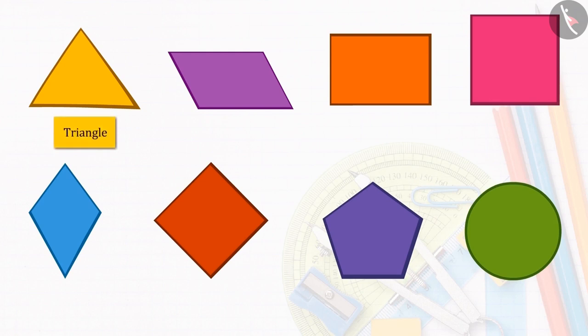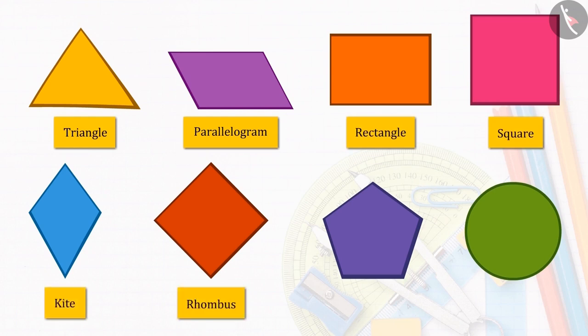This is a triangle. This is a parallelogram, this is a rectangle, square, kite, rhombus, pentagon, and this is a circle.